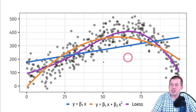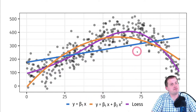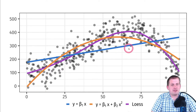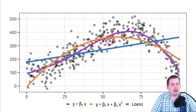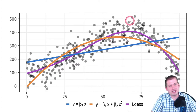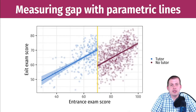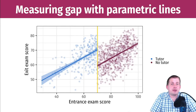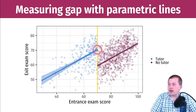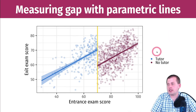Looking at all three lines together on a dataset: the blue parametric straight line doesn't fit well. The orange line with x-squared is curvy and kind of fits. The purple LOESS curve fits really well, capturing the general trends. So in this case a non-parametric line fits better. The main thing we care about is measuring the gap — if you're using a parametric straight line, it's just a y equals mx plus b regression, and our goal is to measure the gap right at the cutoff.